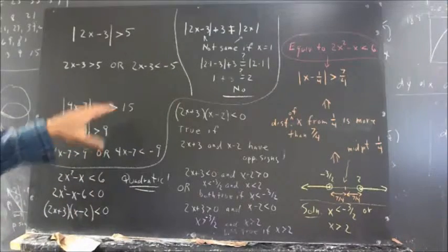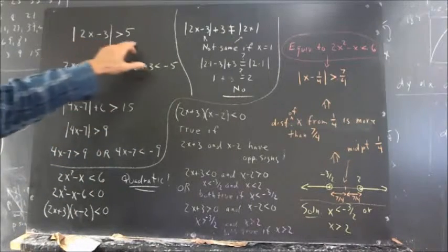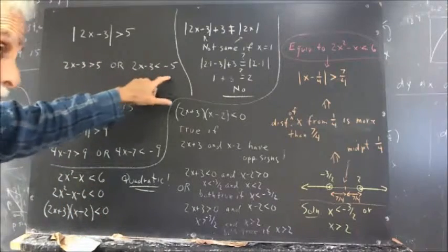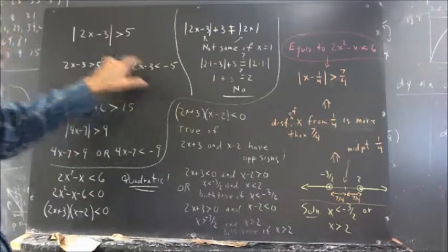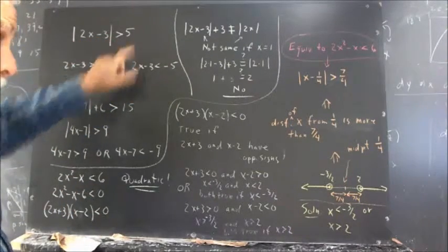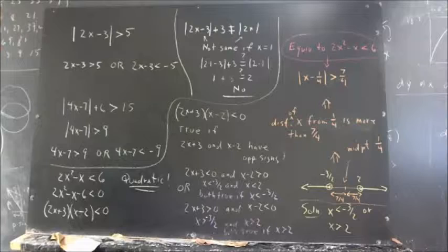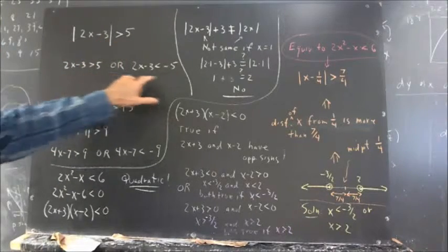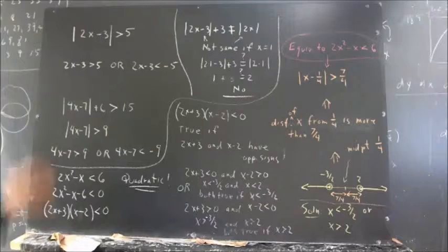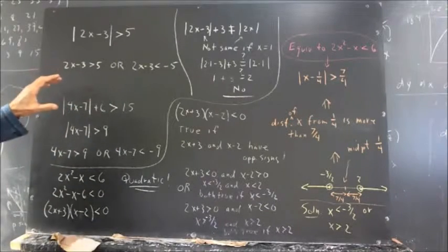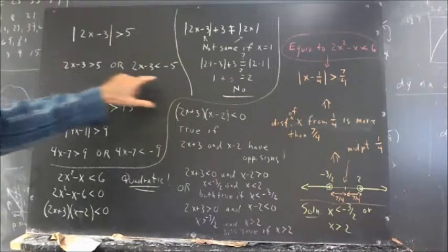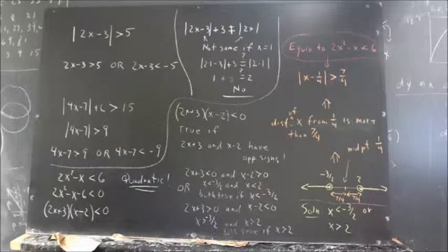If a quantity is greater than 5, its absolute value is greater than 5. If that quantity is less than negative 5, its absolute value will again be greater than 5. So when you see an absolute value inequality, you split it into two regular inequalities.